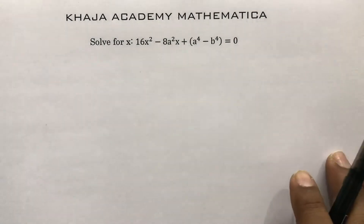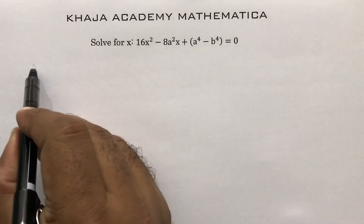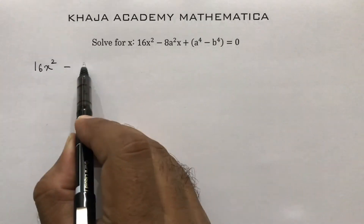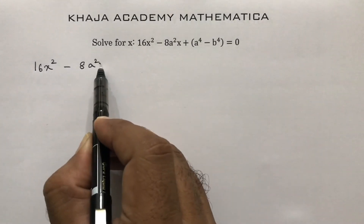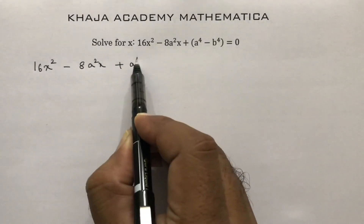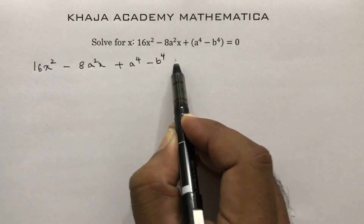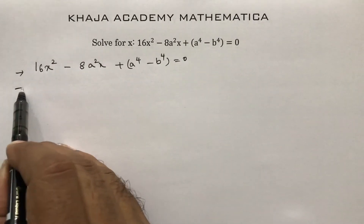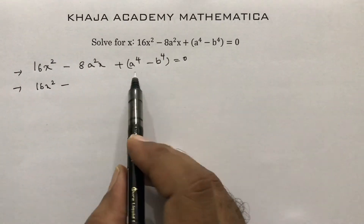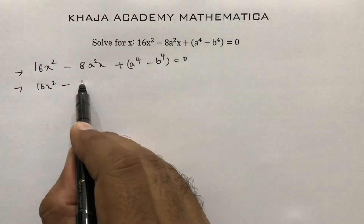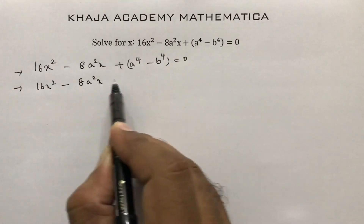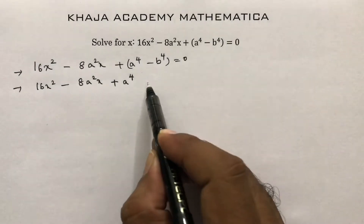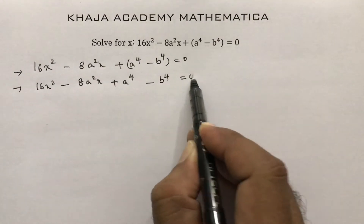Another important Class 10 problem from quadratic equations — solve for x: 16x² - 8a²x + a⁴ - b⁴ = 0. First step: rearrange using brackets as 16x² - 8a²x + a⁴ minus b⁴ = 0.